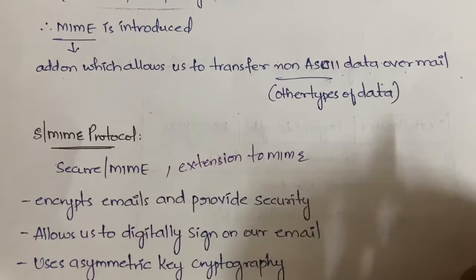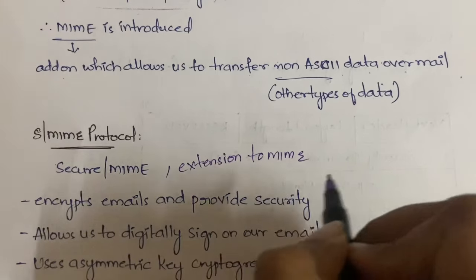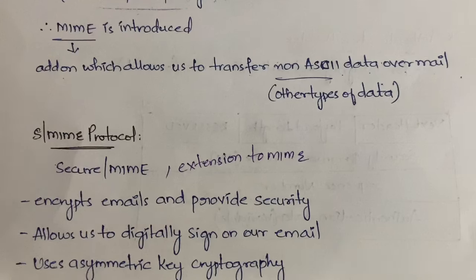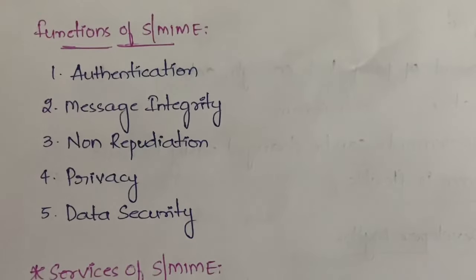S/MIME encrypts the emails and provides security. It will also allow you to digitally sign your email, and it uses asymmetric key cryptography — meaning two different types of keys are used for encryption and decryption. Now let's look at the functions and services provided by S/MIME.